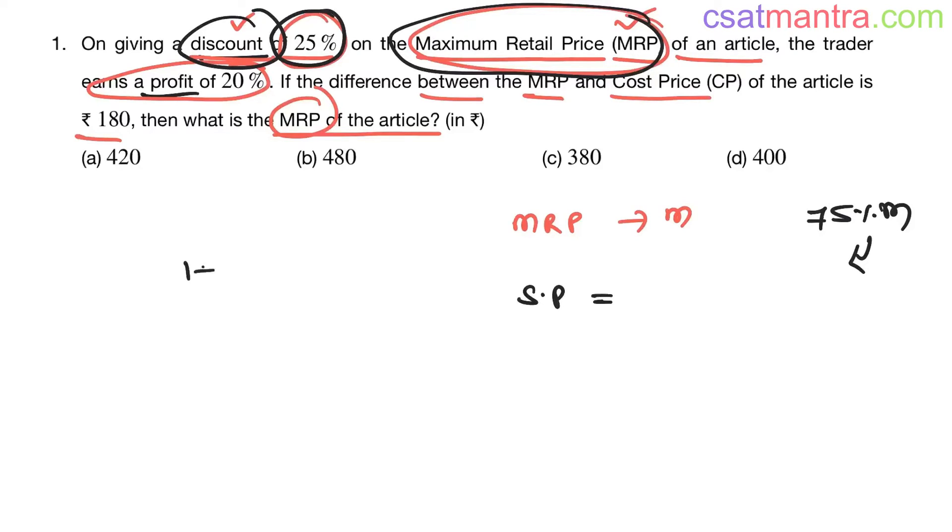So this is our selling price, my friends. We indicate selling price with S in this formula. S is equal to 75% of m, that is 0.75m. 75% is 0.75, which is 75 by 100, so this is 0.75m.